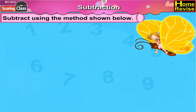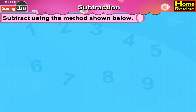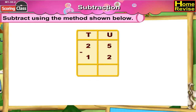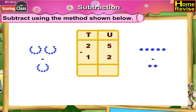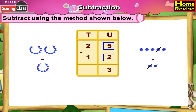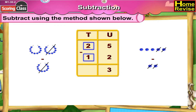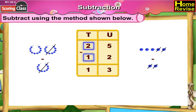Subtract using the method shown below. 25 minus 12. First we will arrange them under the tens and units column. Then it would be 2 tens 5 units minus 1 ten 2 units. Looking at the units column, 5 units minus 2 units is 3 units. Tens column: 2 tens minus 1 ten is 1 ten. So it is 1 ten 3 units, or 25 minus 12 is 13.